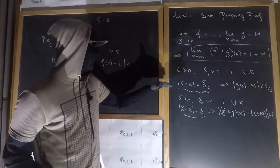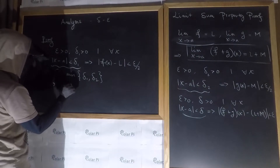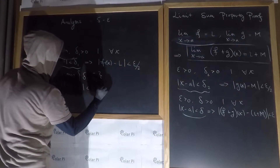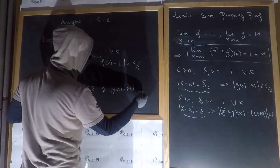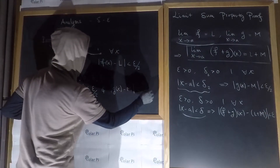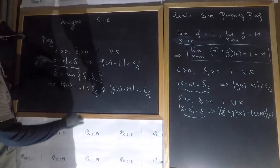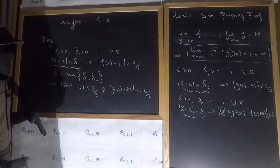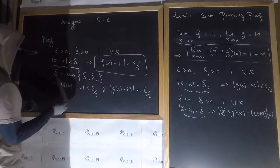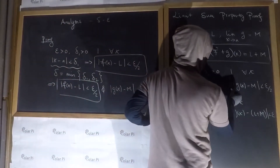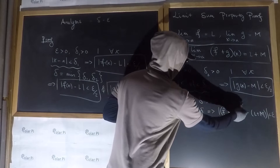If this condition is satisfied, it immediately follows that |f(x) - L| < ε/2, and if this condition is satisfied, it immediately follows that |g(x) - M| < ε/2. By choosing delta as the minimum of delta one and delta two, both of these will be satisfied from this single premise, and both conclusions follow.